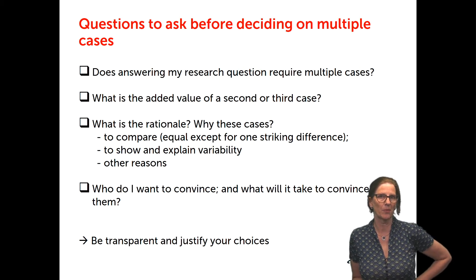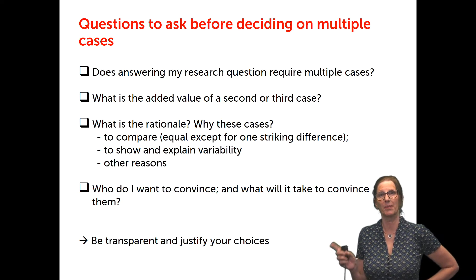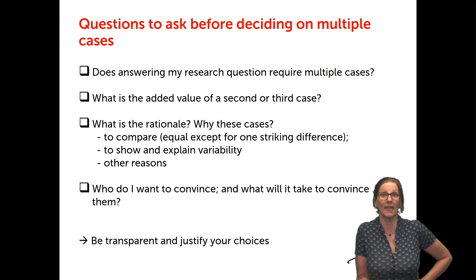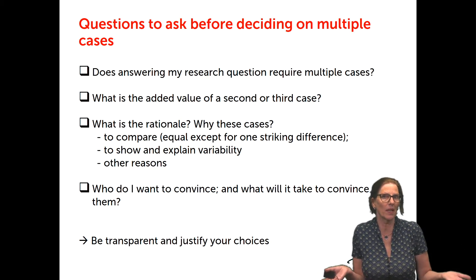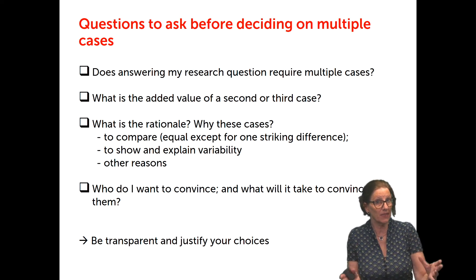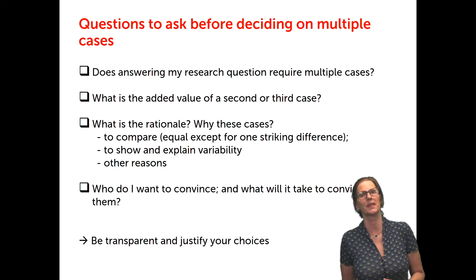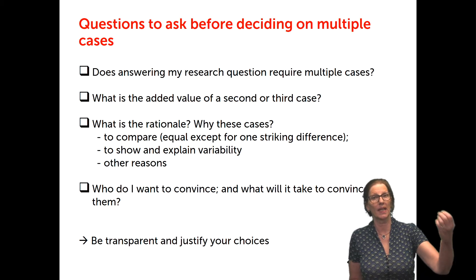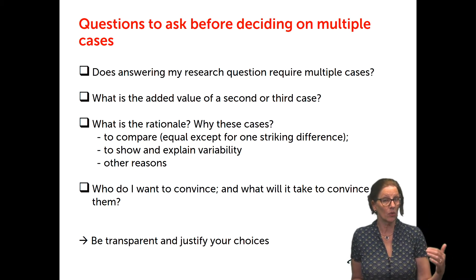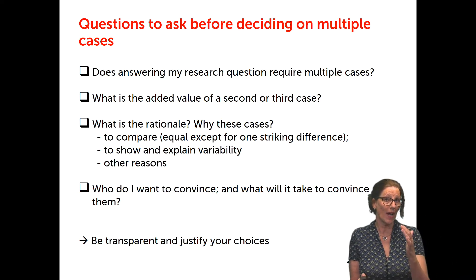Before deciding on multiple cases, ask yourself: does answering my research question require multiple cases, or would a single case study be better? What is the added value of the second or third case? What is the rationale — why these cases? People sometimes say they did research in three communities, but why three? Why not one? Why not ten? And why these three communities specifically? Also ask yourself explicitly: who do I want to convince, and what will it take for them to be convinced? Always think about the choice, be transparent, and justify your decisions.